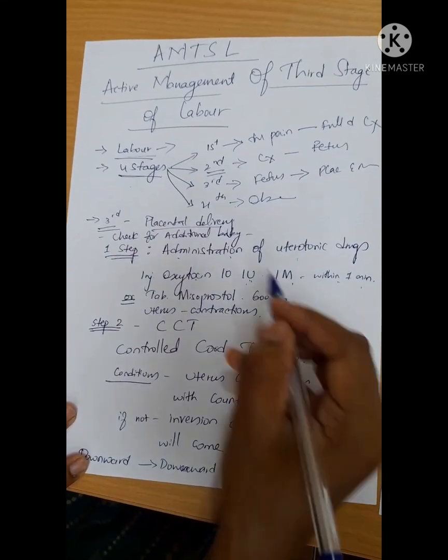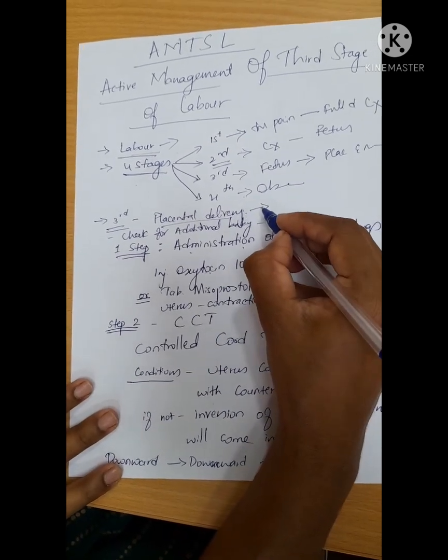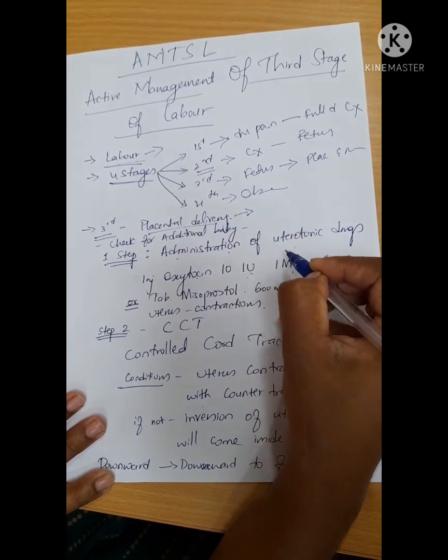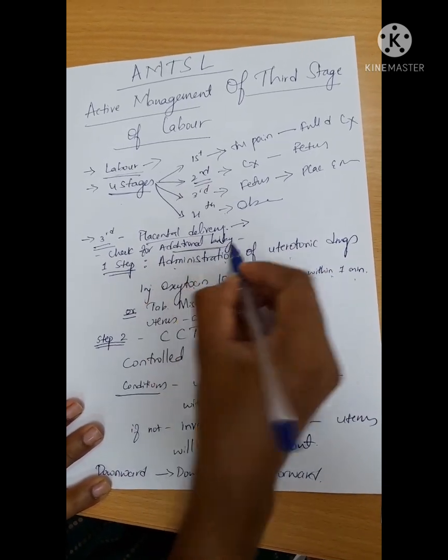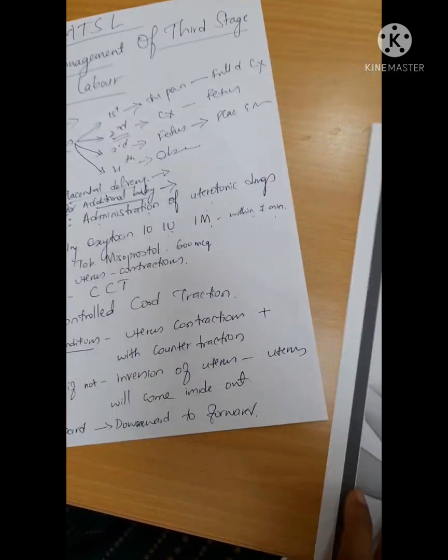The fourth stage is a very important stage, but the third stage of labor where placental delivery happens is also critical. Before placental delivery, there are two very important steps. Additionally, before the baby is delivered, you should palpate the abdomen to check, then you should go for the steps.